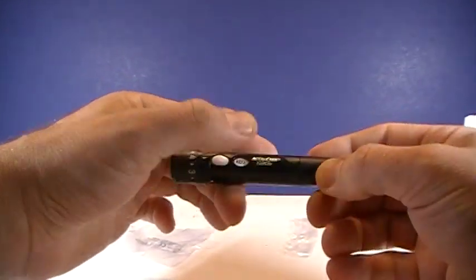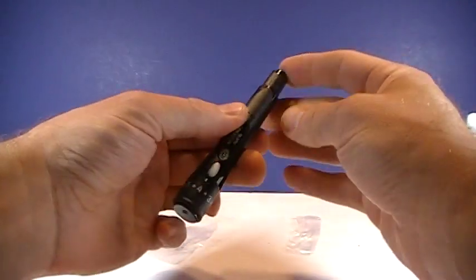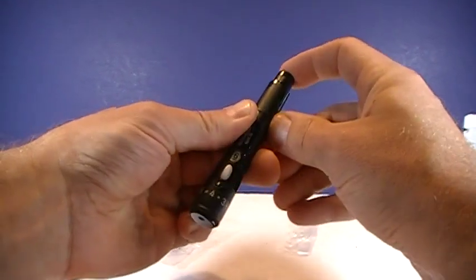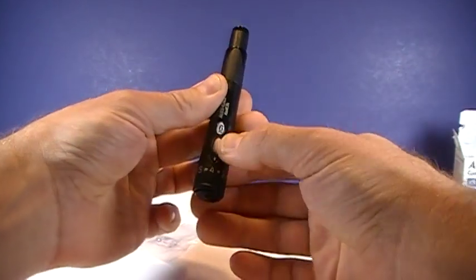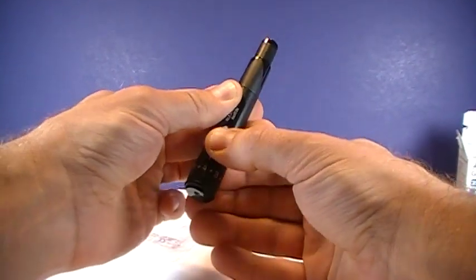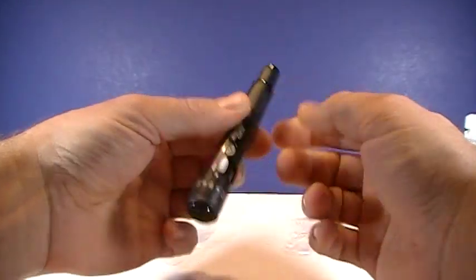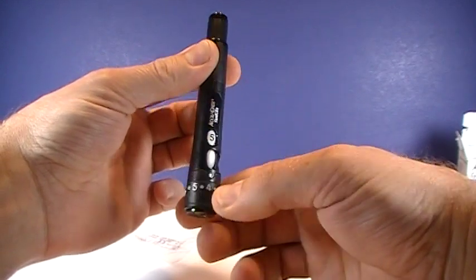But there it is, ready to go. This is what you push to lance yourself. And then you use this button to go to the next lancet. So now you have five lancets remaining in this device.